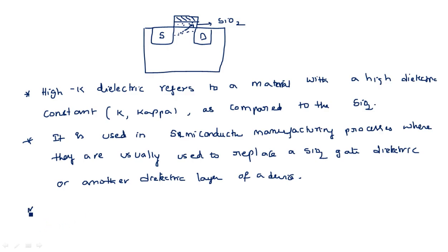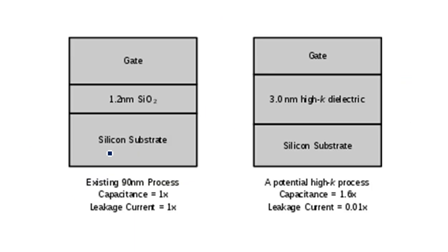In a metal oxide semiconductor field effect transistor — a MOSFET — the gate is the material at the gate terminal, below which we have the silicon substrate. In between these two we have a silicon dioxide layer of 1.2 nanometers, for example. For a 90 nanometer technology, this 1.2 nanometer silicon dioxide exists between the gate and silicon substrate.